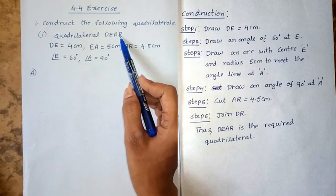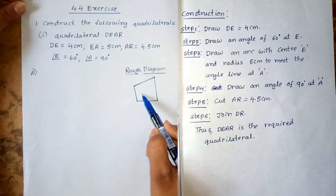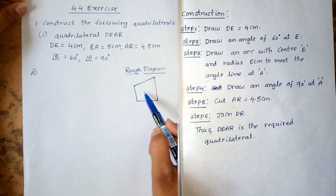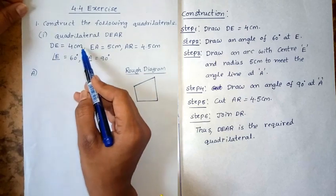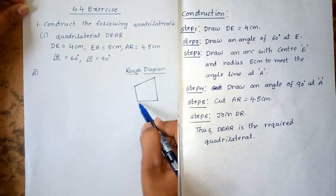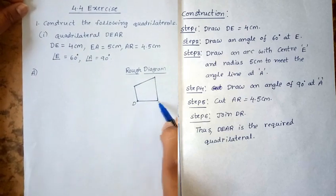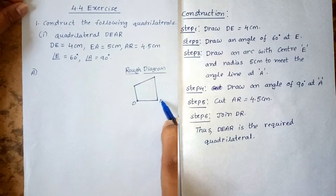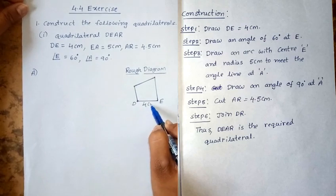First, draw a rough diagram of the quadrilateral D-E-A-R. In the rough diagram, DE equal to 4cm. Consider point D and point E, so DE is equal to 4cm.